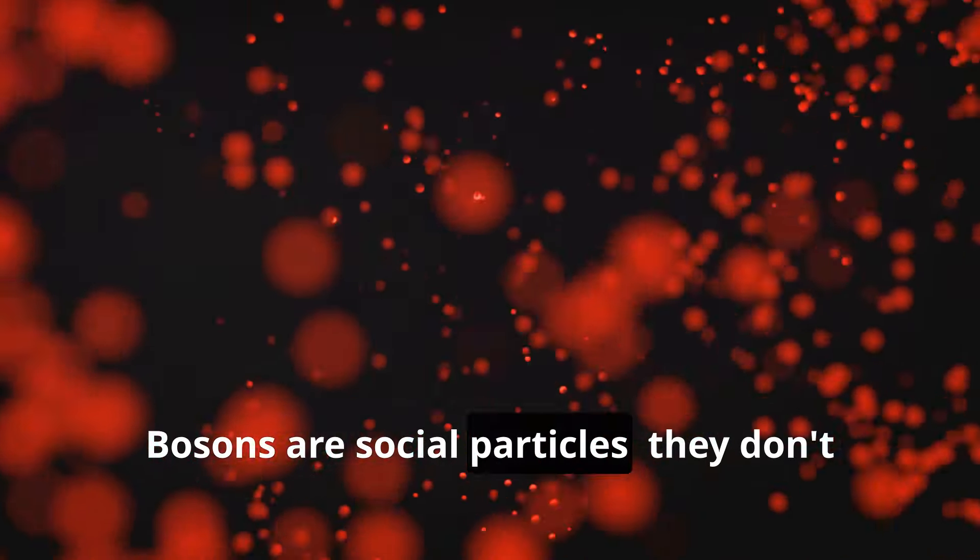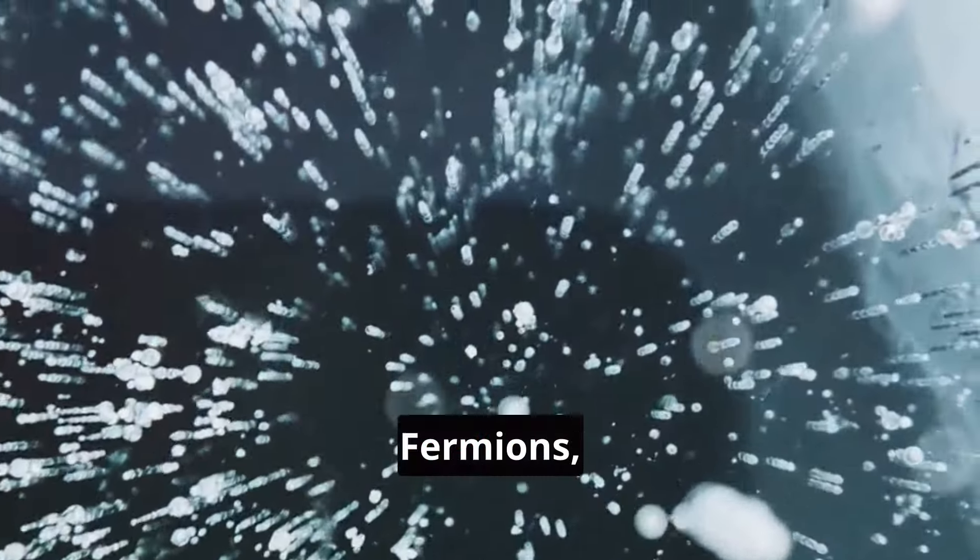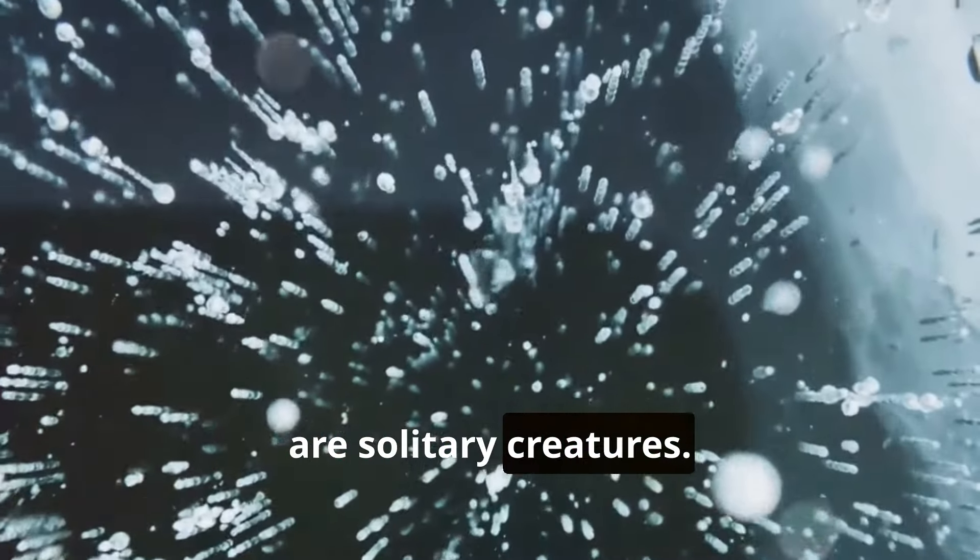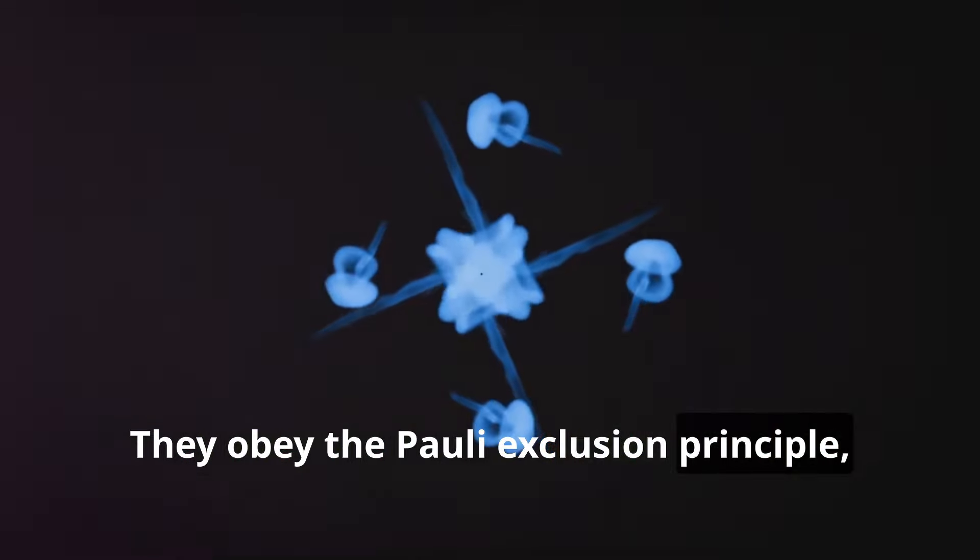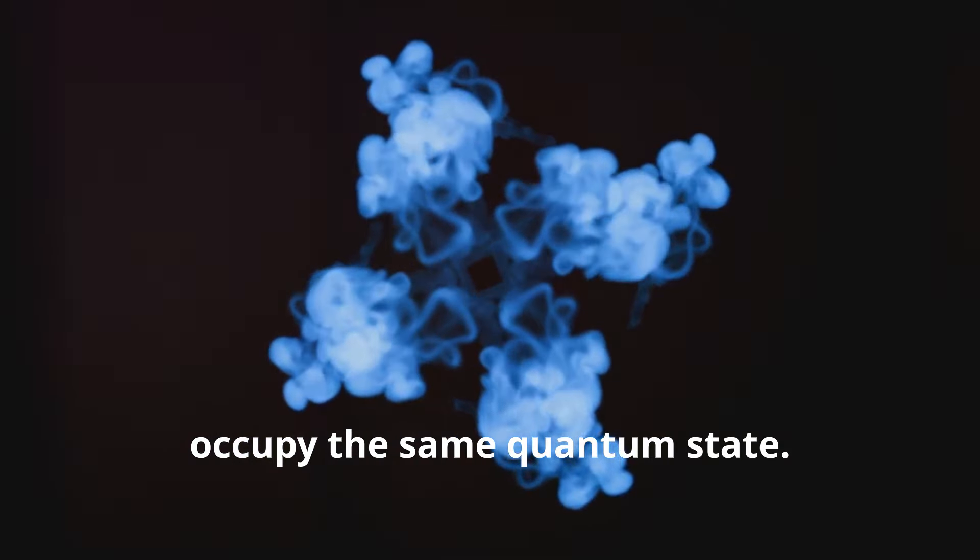Bosons are social particles. They don't mind occupying the same quantum state. Fermions, on the other hand, are solitary creatures. They obey the Pauli exclusion principle, which states that no two fermions can occupy the same quantum state.